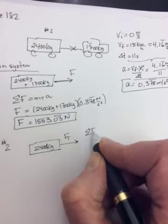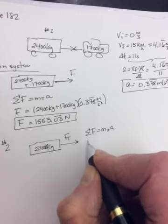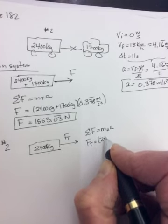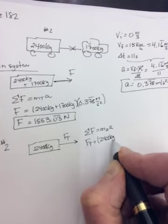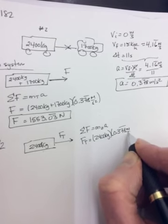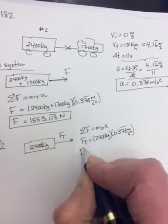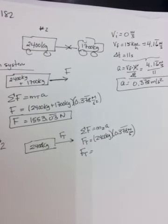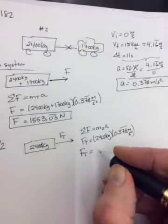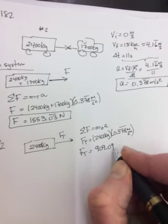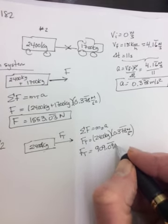So number two, 2400 kilograms. And there's a force pulling forward. That's the tension in the rope between them. No friction, so nothing pulling backward. So sum of the forces will equal M2A. The only force is tension. And that will be equal to 2400 kgs times that 0.378 repeating meters per second squared. And when you do this, you get 909.09.